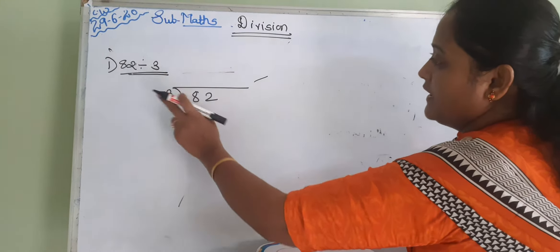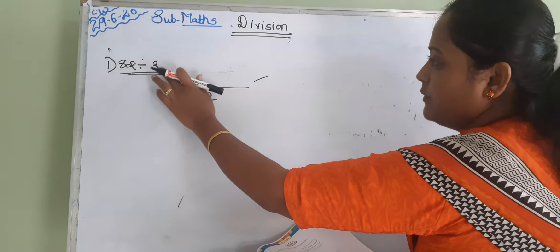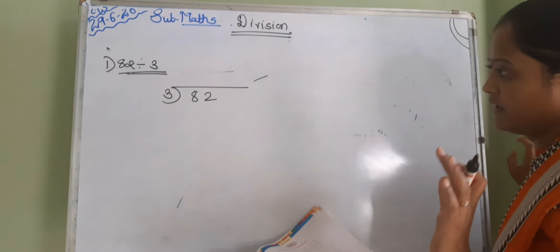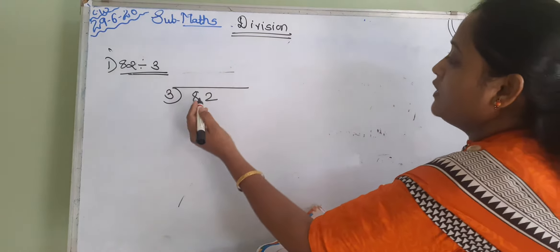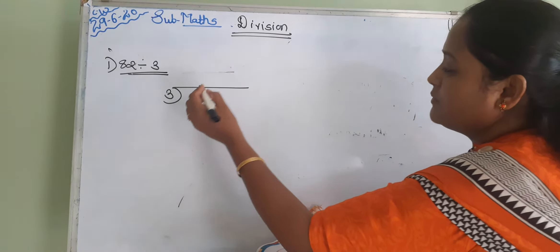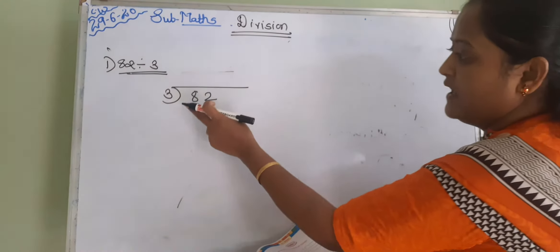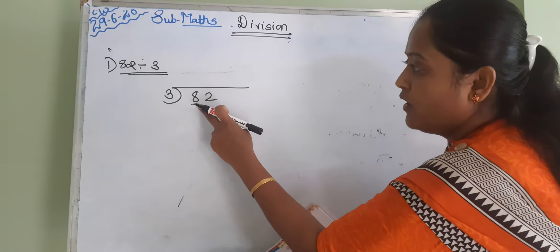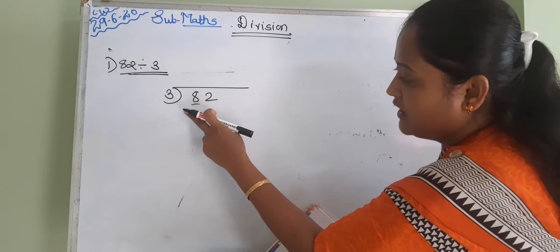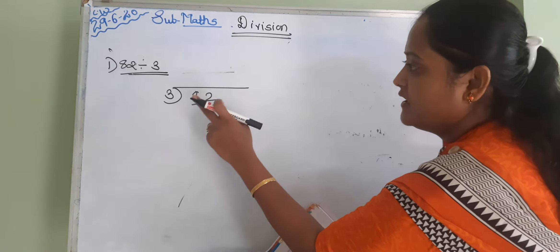Here you should be divided 82 divided by 3. 82 को हमें 3 से divide करना. So, हमें first क्या देखना है? जो first unit रहेगा, जो first number रहेगा, उसको observe करना. Your number is 8. तो 8 is greater than 3? Yes, 8 is greater than 3.